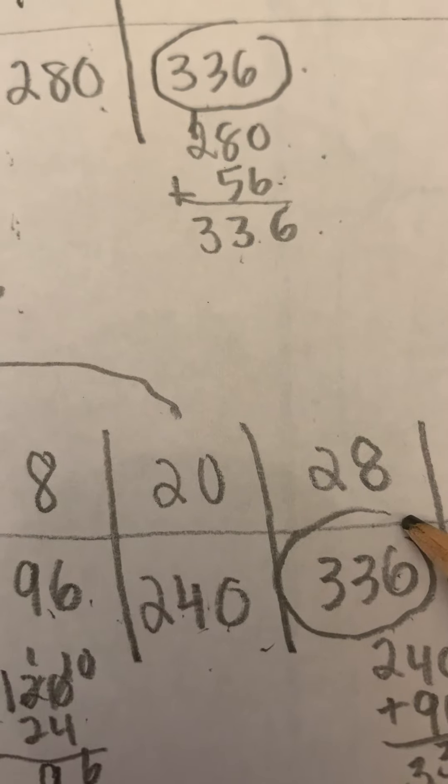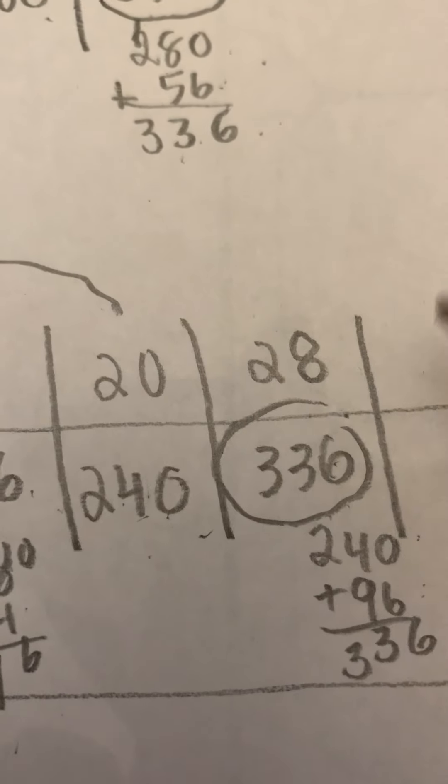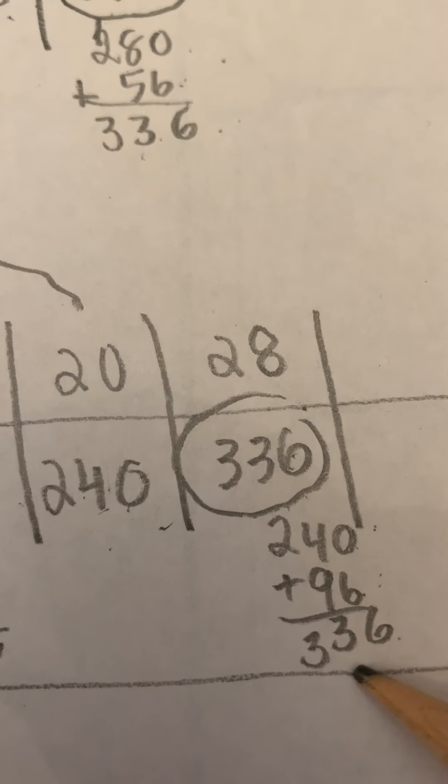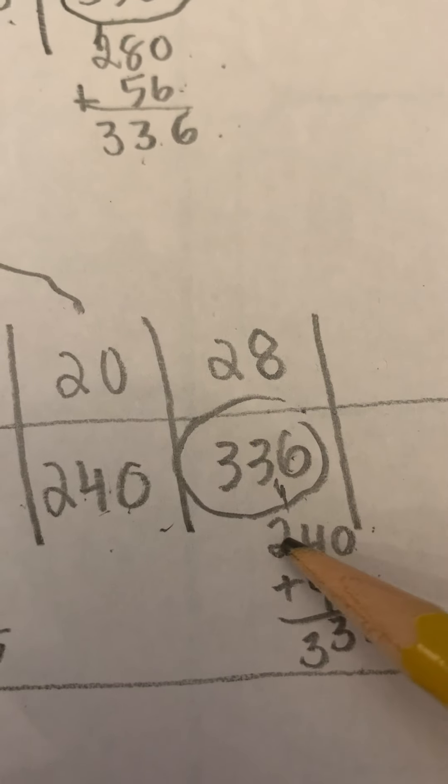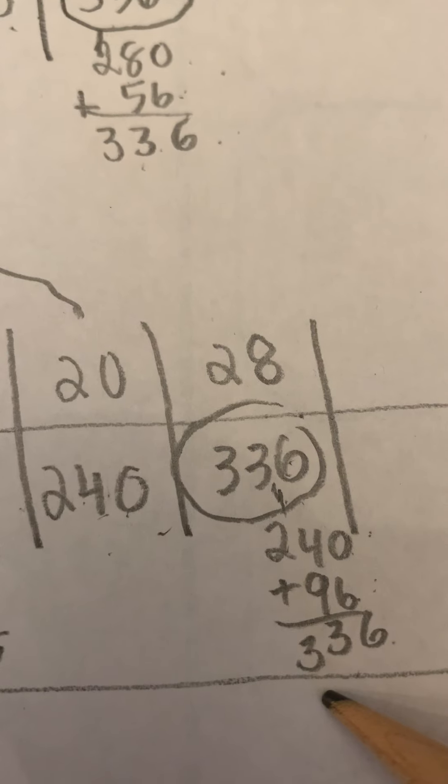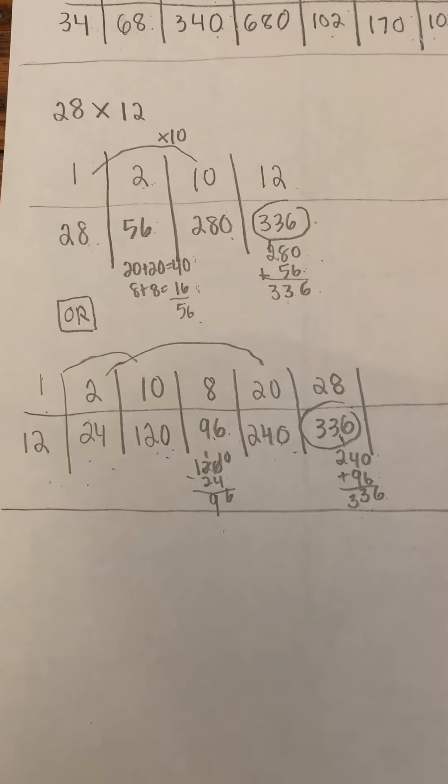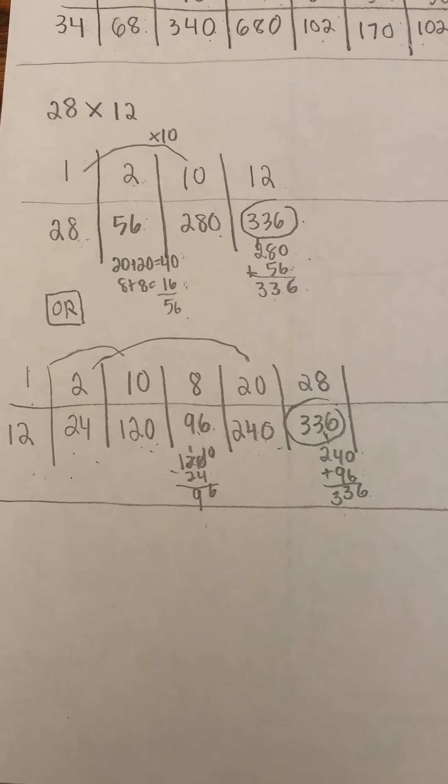And then my 28 is my 20 sets plus my 8 sets. 0 plus 6 is 6, 9 and 4 is 13, carry the 100. 2 plus 1 is 300, 336. Oh my gosh, same answers. So different work, but you arrive at the same answer. How did you do, friends?